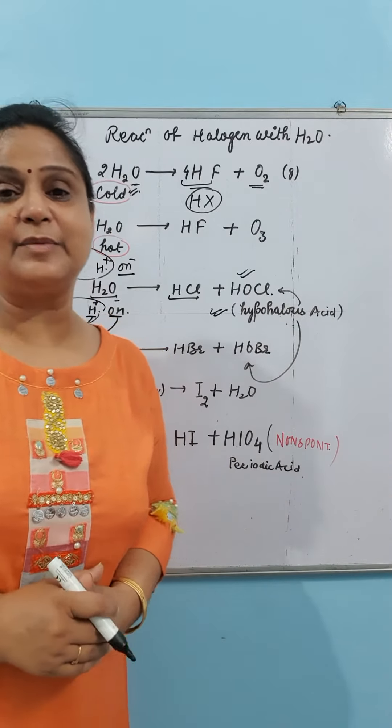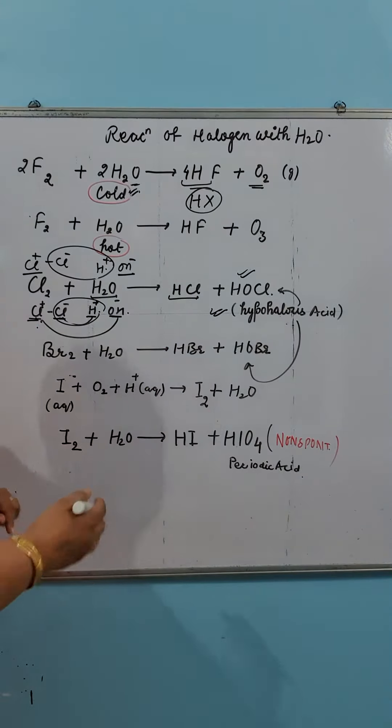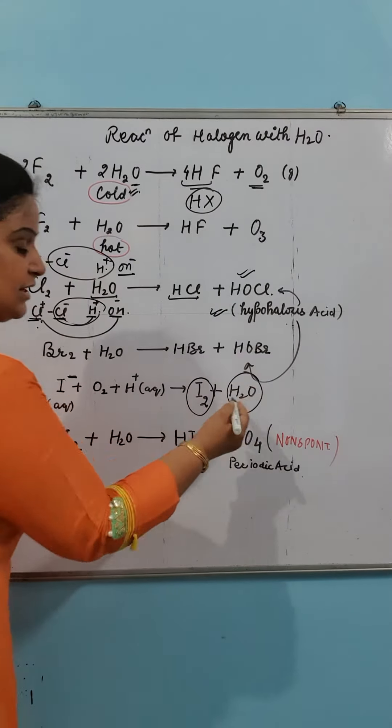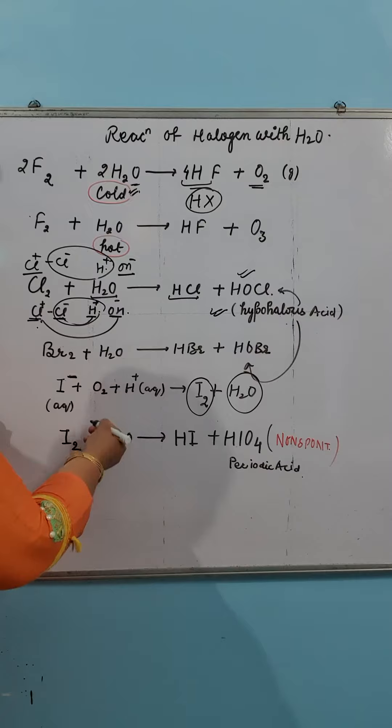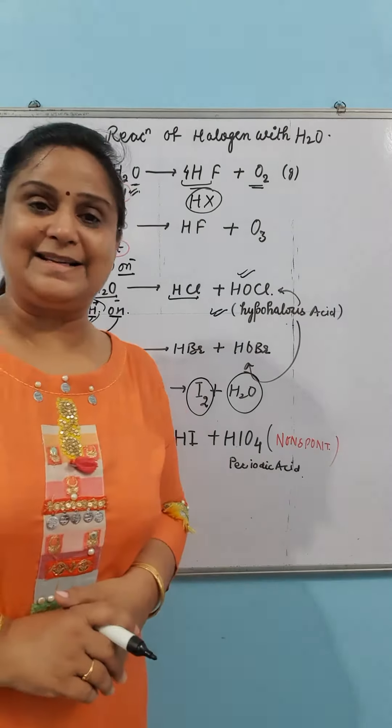When it reacts in acidic medium with oxygen, this reaction is reversed. Iodine can be converted back into I₂ and water. This is the only halogen reaction that is non-spontaneous and requires a catalyst.